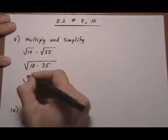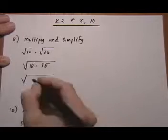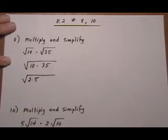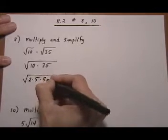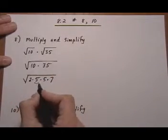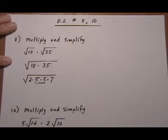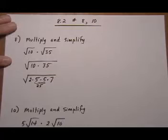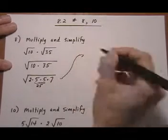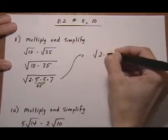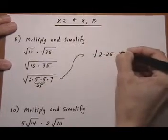Now under one radical let's factor what we have here. We have 10 which is 2 times 5 and 35 which is 5 times 7. And then what I notice is that I have a 5 times a 5 here. I'm going to rewrite this as 25 which is a perfect square so I'm going to be able to take the square root of it.